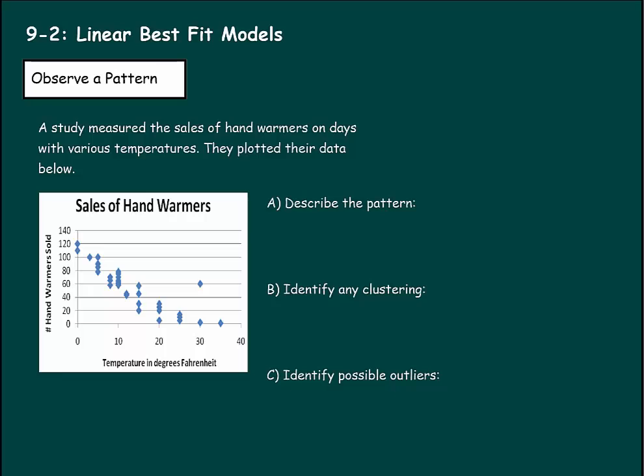So let's look at this scatter plot. This one's comparing temperatures in degrees Fahrenheit and number of hand warmers sold. We're going to describe this pattern. Remember, we're going to look for the type of relationship and whether it's linear or not. Well, this looks like a negative relationship. As the temperature goes up, people don't need to buy as many hand warmers. So there's going to be fewer of them sold. So we'll say negative.